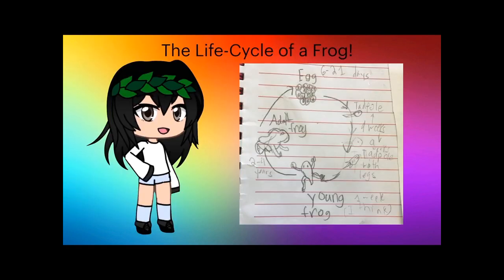The life cycle of a frog: egg, to tadpole, to tadpole with legs, to young frog, to adult frog, and then back to egg.